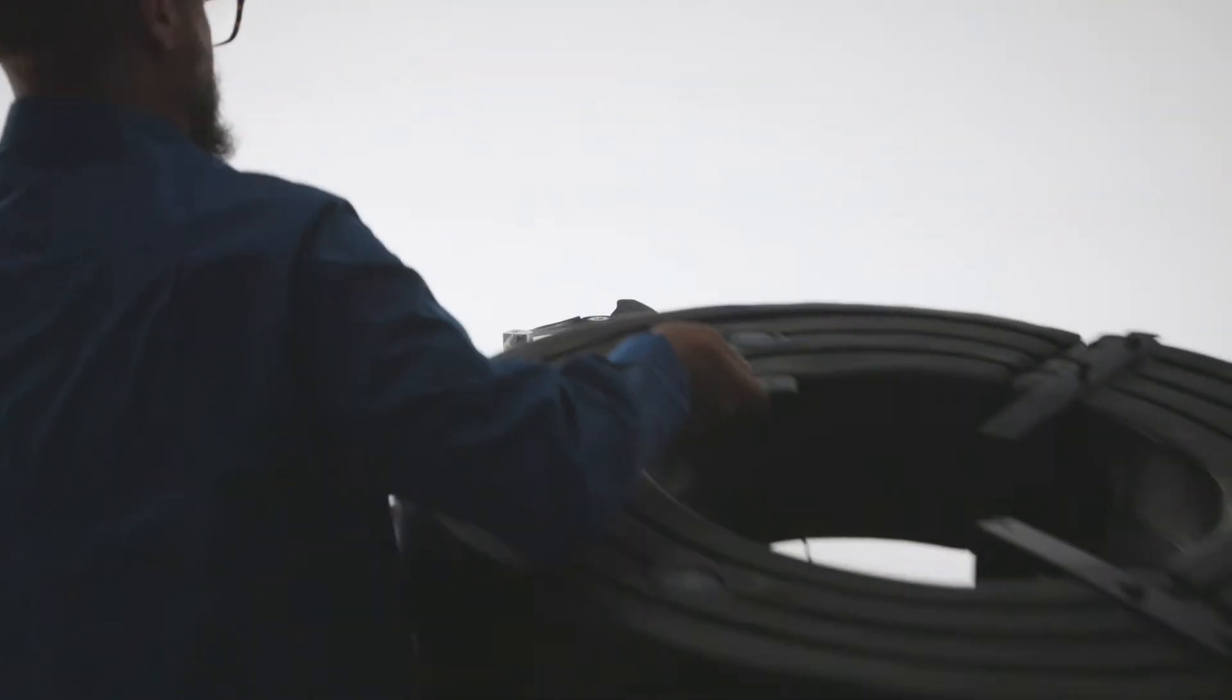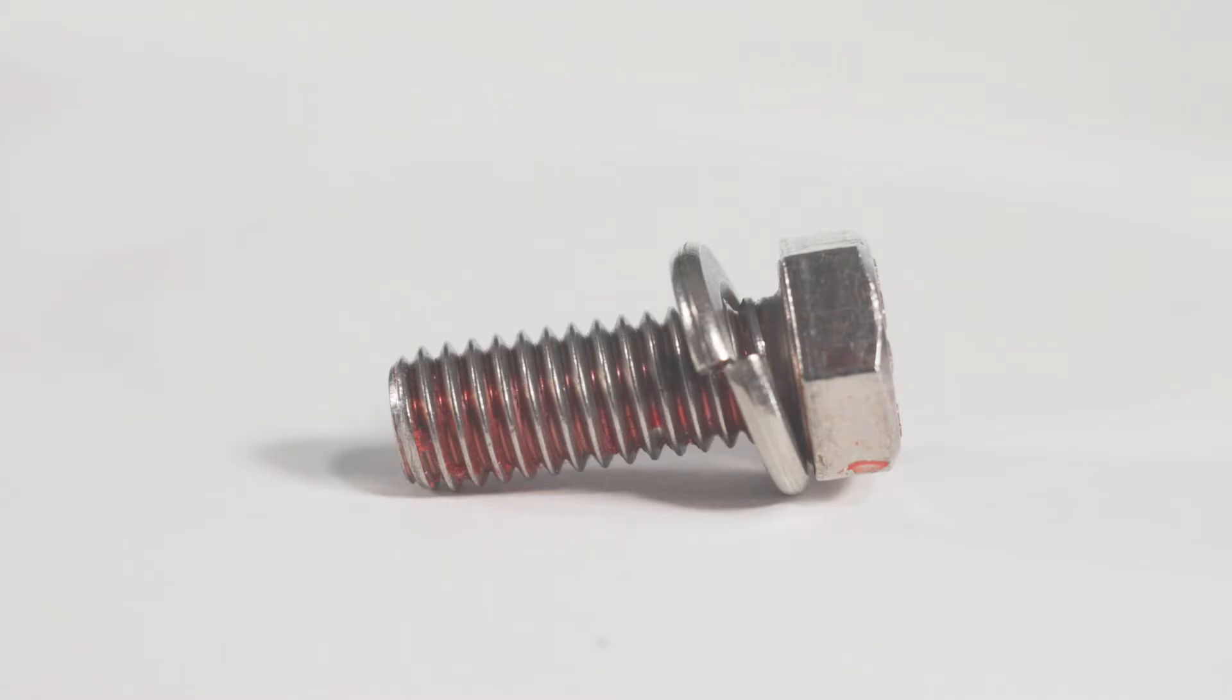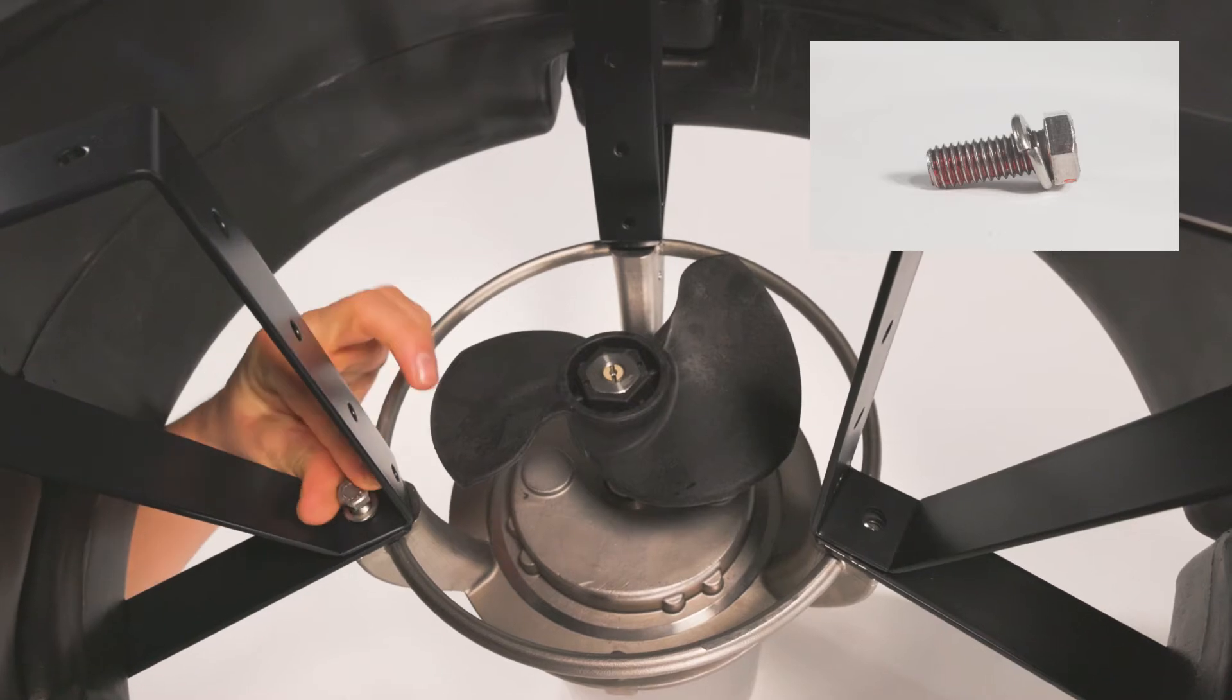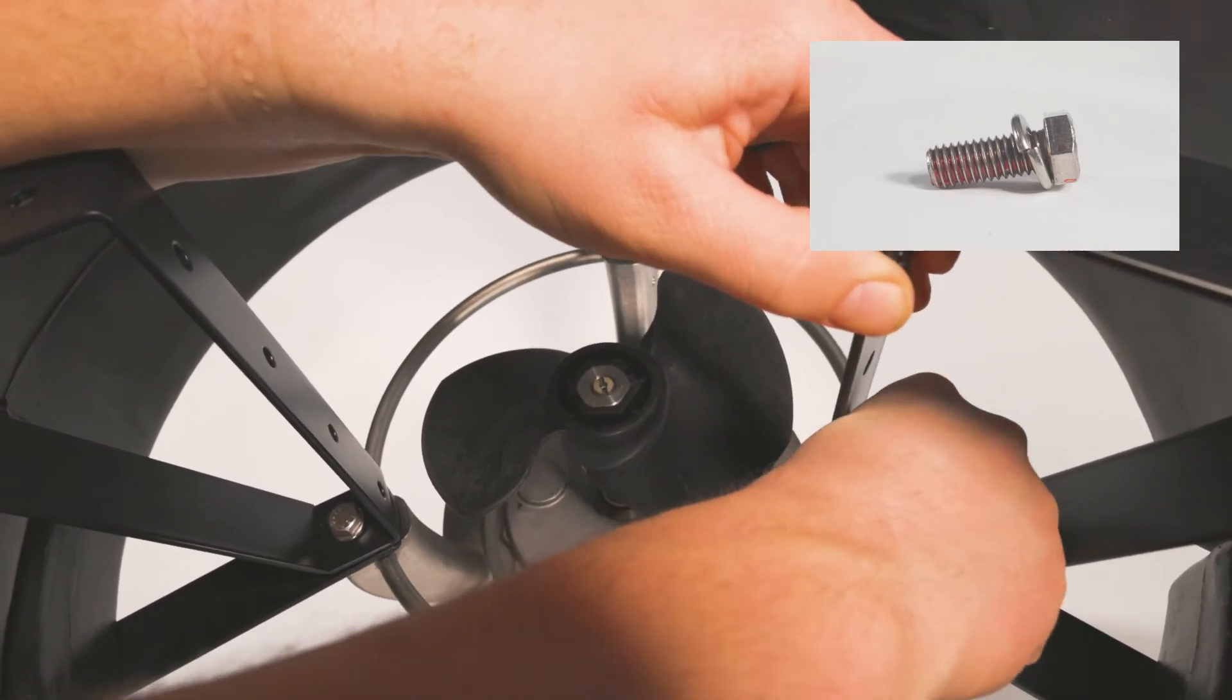Now lift the float assembly and place it over the aerator. Use the 3/8 by 1 inch bolts and 3/8 inch lock washers to secure the top and bottom float brackets to the aerator mounting ring.